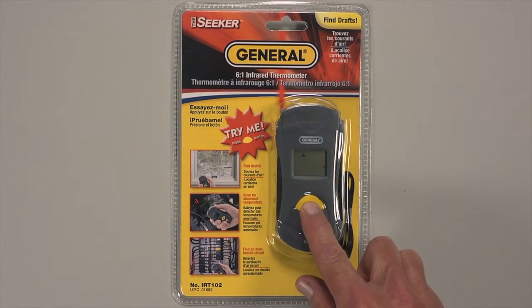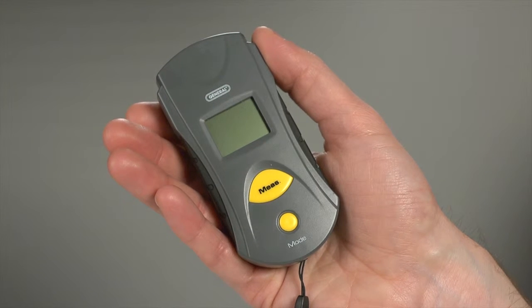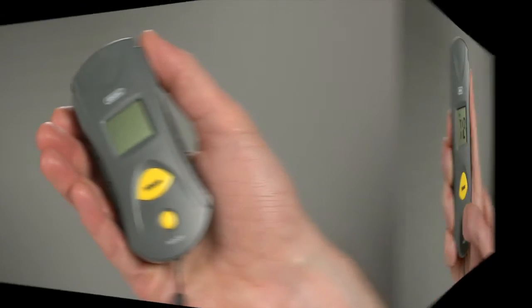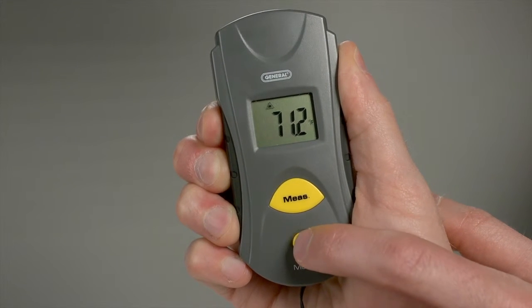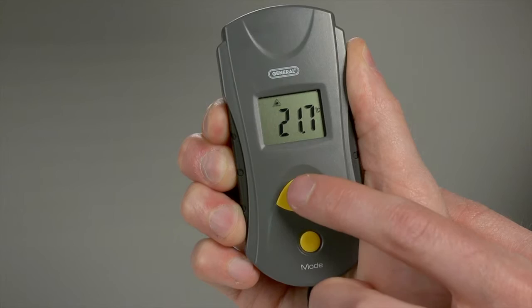Our packaging lets you try before you buy. Don't let the small size and lightweight fool you. The IRT-102 has powerful capabilities. Measure temperatures from negative 22 to 482 degrees Fahrenheit, or measure in Celsius.